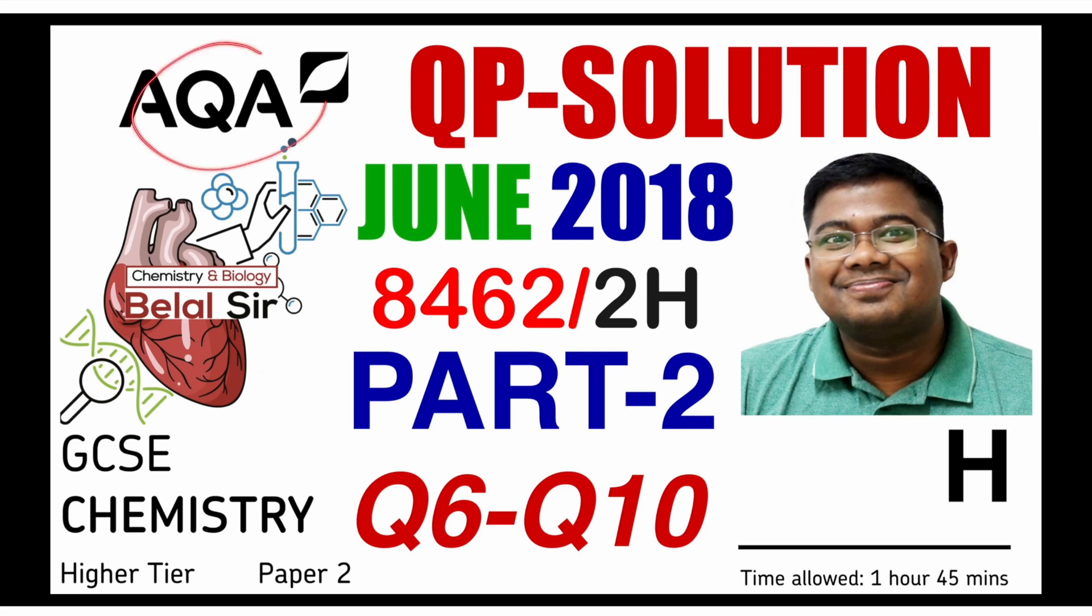Hello everyone, today we're going to be solving AQA GCSE chemistry higher tier paper 2. In this particular video, we are solving June 2018. This one is a part 2 of the video where we're going to be solving from question number 6 to question number 10.